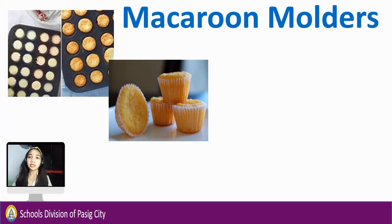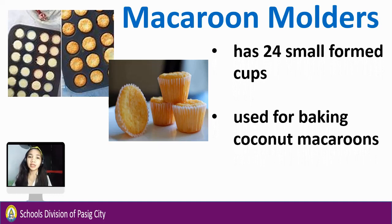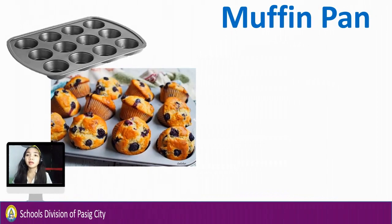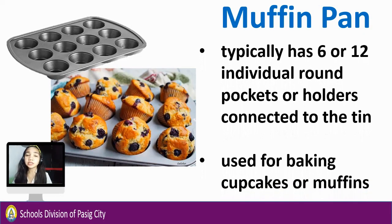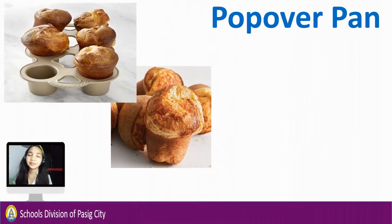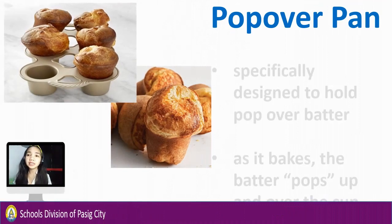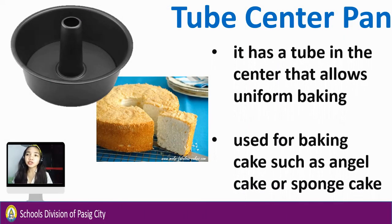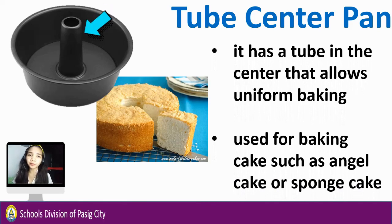Macaroon molders have 24 small formed cups, used for baking coconut macaroons. Note that macaroon is different from macaron — macaron doesn't need molders. Muffin pan typically has 6 or 12 individual round pockets or holders connected to the tin, used for baking cupcakes or muffins. Pop-over pan is specifically designed to hold pop-over batter; as it bakes, the batter pops up and over the cup. Tube center pan has a tube in the center that allows uniform baking, used for baking cakes such as angel cakes or sponge cakes.